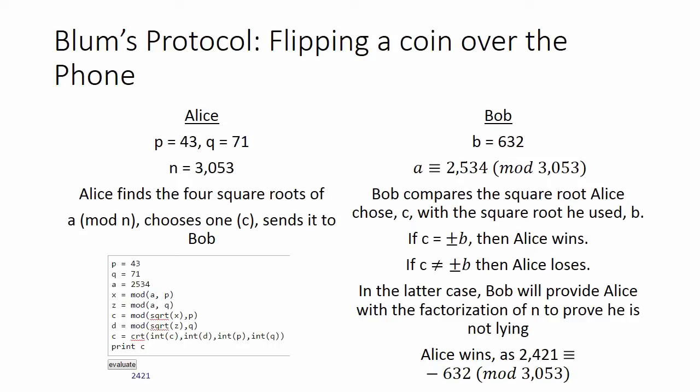Bob then calculates a which is b squared mod n, which in our case is 2,534 mod 3,053. Bob sends a to Alice who finds the four square roots of a modulo n, chooses one of them and sends it to Bob.